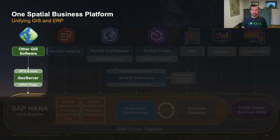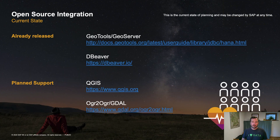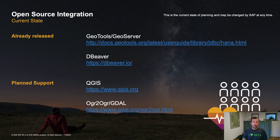If your GIS department is not working with ESRI software, there is also support for other GIS software. SAP HANA has support for GeoServer as middleware — an open source software that connects to SAP HANA and provides web services for spatial data to be consumed by other applications. SAP HANA is also supported by DBeaver, a platform-independent database management studio with excellent spatial data support. In future, we also plan native support for QGIS as well as OGR to connect even further data sources.